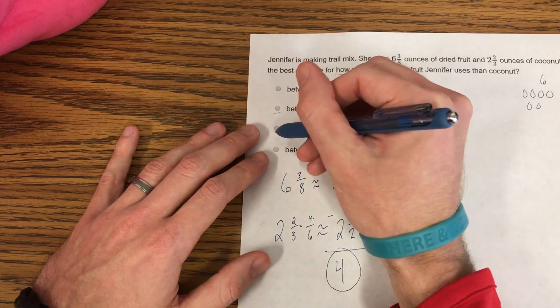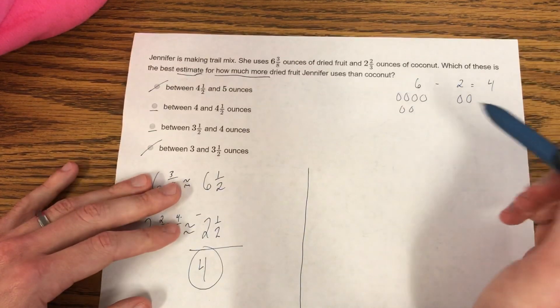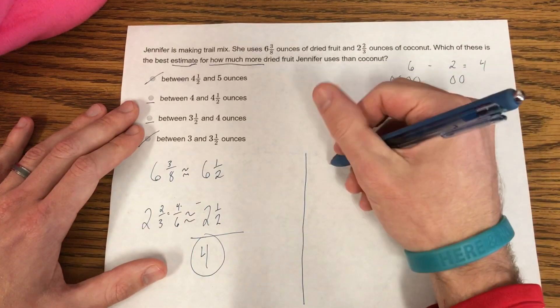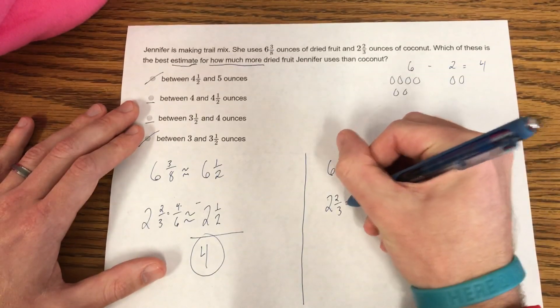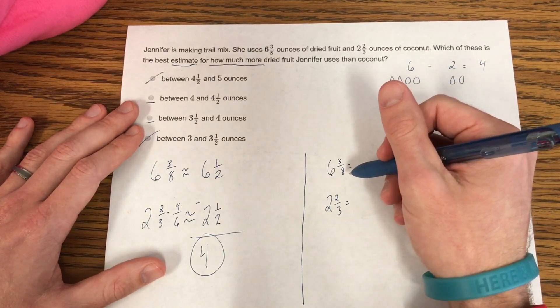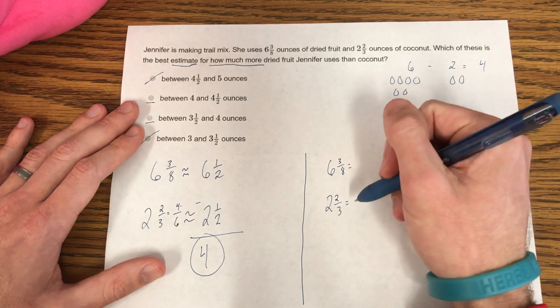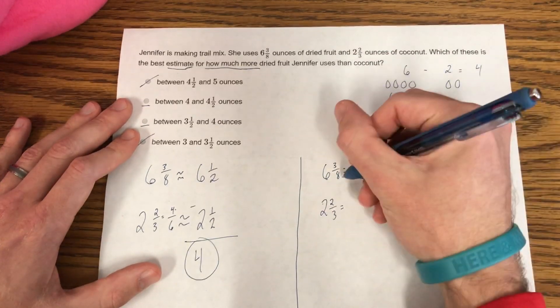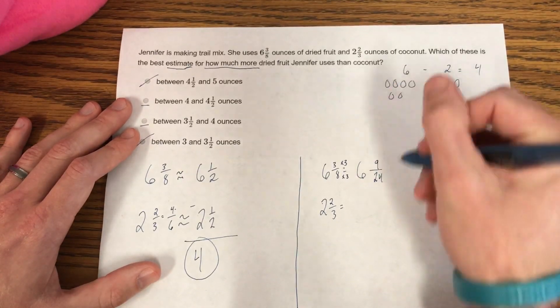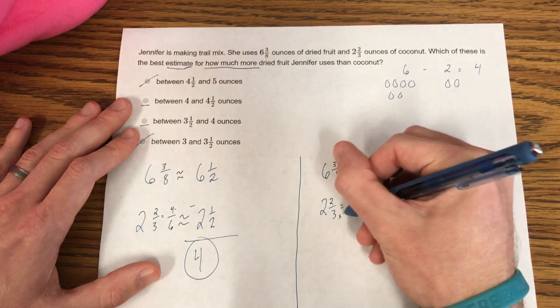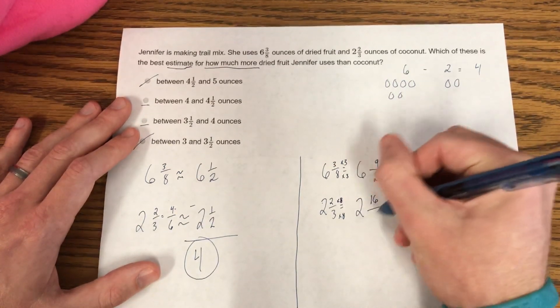So that means it's got to be this one or this one. Can't be this one, and it can't be this one, because neither of those have 4 in the answer. So let's solve it to see what it actually is. So 6 and 3/8 minus 2 and 2/3. I'm going to use 24 as a common denominator, because 8, 16, 24, 3, 6, 9, 12, 15, 18, 21, 24. So this is going to be 6, and this was times 3. This was times 3. So this would be 6 and 9/24. And this would be times 8, and this would be times 8. So this would be 2 and 16/24.